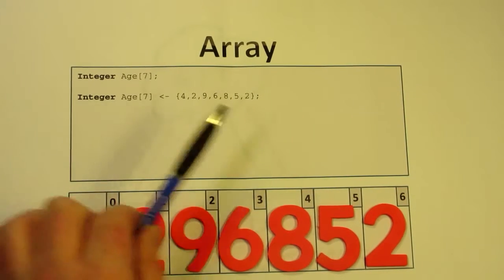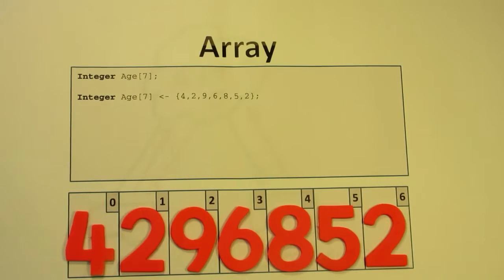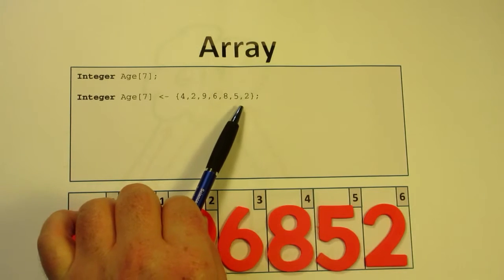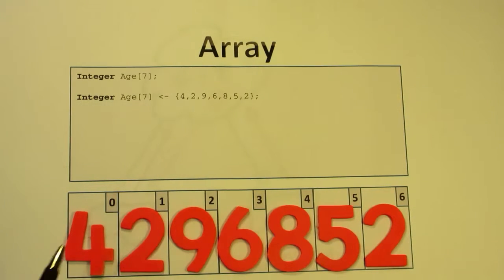So this is what it looks like when we have an array declared. We've declared an array with seven elements. We'll put values 4, 2, 9, 6, 8, 5, and 2. Here is the array - it's a collection of seven integer variables. It is worth noting that we start at the number zero in an array, so it's index...